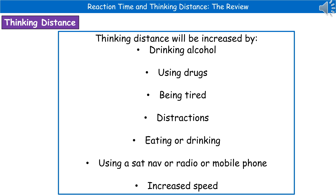The next thing to consider is what factors would affect the thinking distance. A typical question asks you to state factors that will increase it. Be careful — if the question has already mentioned increased speed, don't write speed again; if it hasn't, then increased speed is a good one. Other factors are anything that affects your reactions as an individual: drinking alcohol or using drugs (count as one marking point), being tired, distractions such as eating, using a sat nav, radio, or mobile phone. A good set to remember is: drinking alcohol or using drugs, being tired, and increased speed.